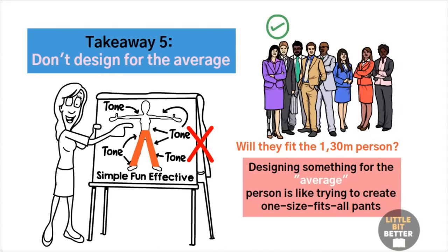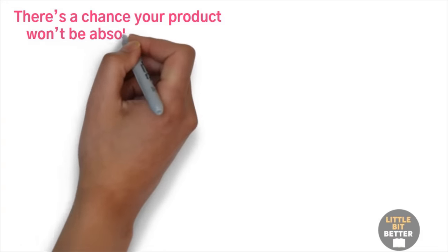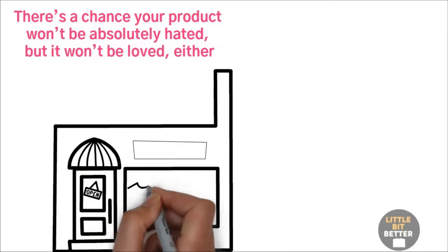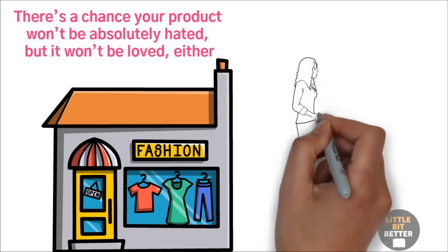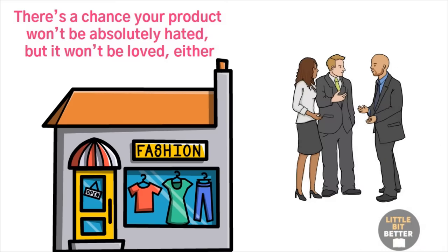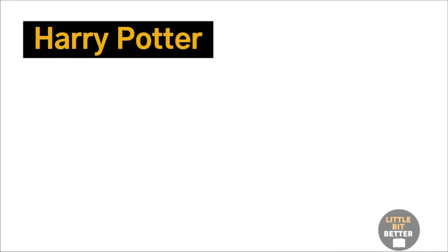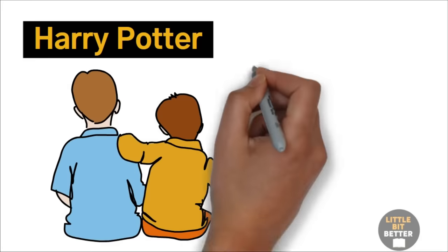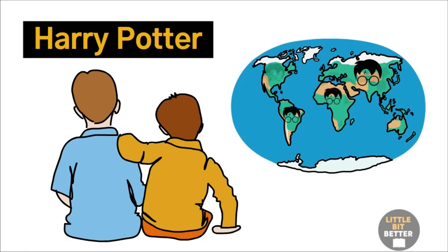Just like how everyone's body is unique, everyone's preferences and needs are also unique. If you try to design something for the average person, well, there's a chance your product won't be absolutely hated, but it won't be loved either. Instead of trying to make something that everyone will like, it's better to focus on a specific group of people who have unique needs or preferences. If you can make something that these people really love, they'll tell all their friends and help to make your product a success. An interesting example of that is Harry Potter. The story was created for English 11-year-old boys, but became so popular among their audience that it leaked into other audiences too. And today, it's a story loved by people of all ages and countries.